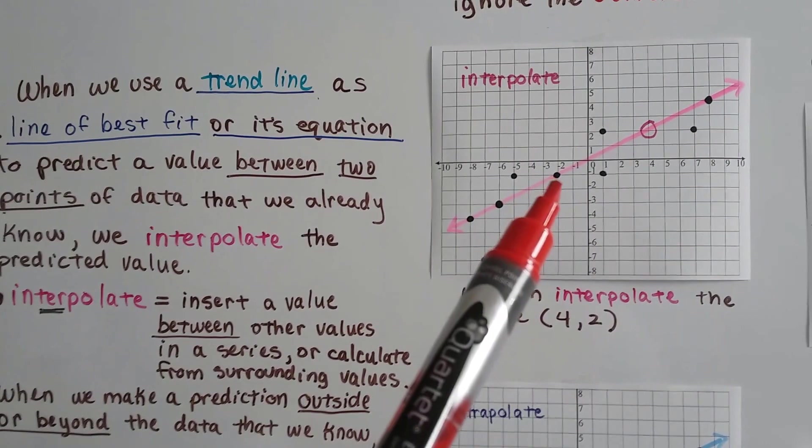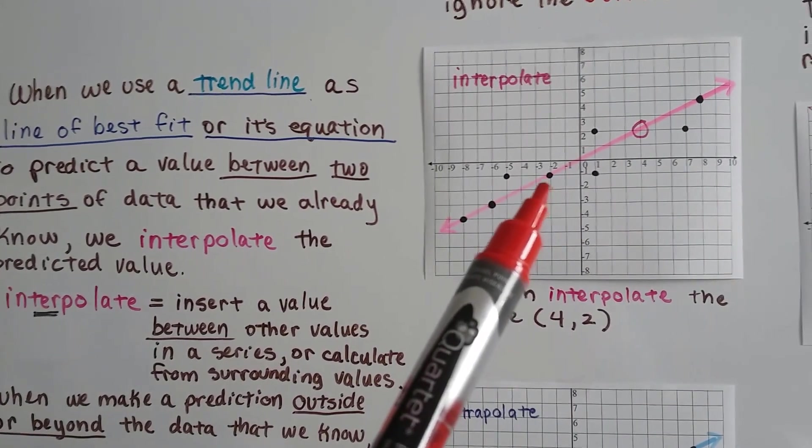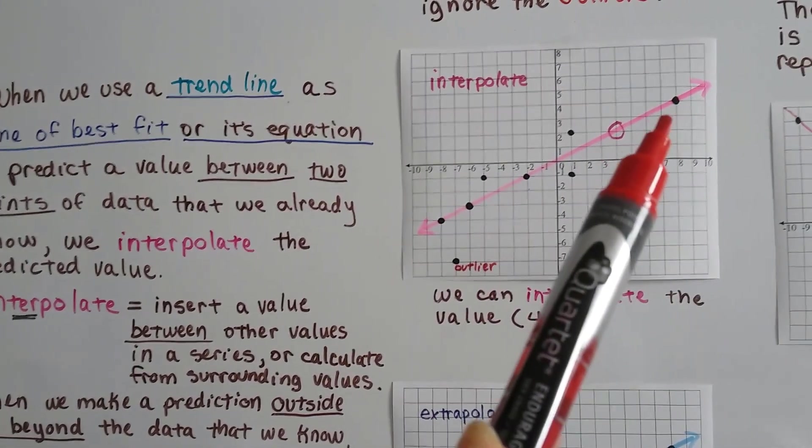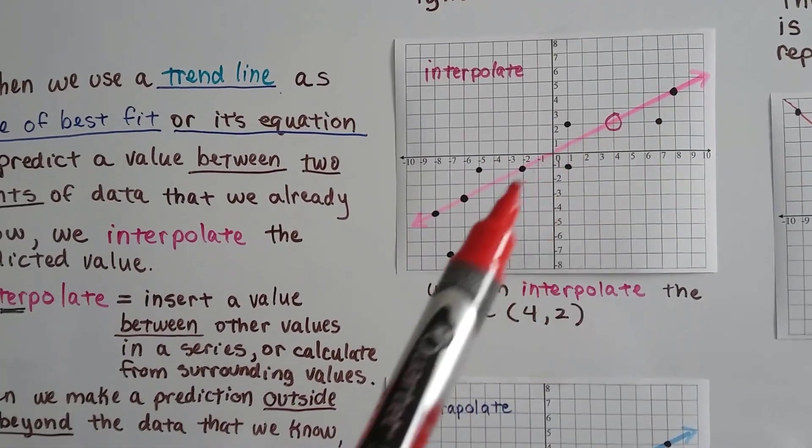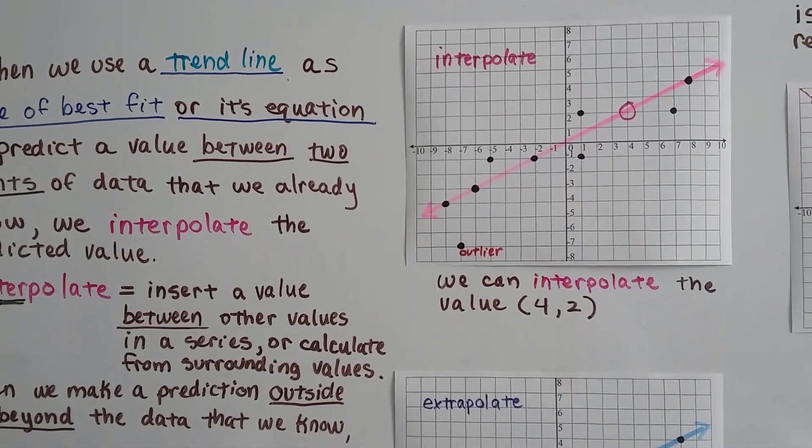So if we know that negative 2, negative 1 is a point and 8 and 4 is a point, we know that anything between them can be interpolated as a point.